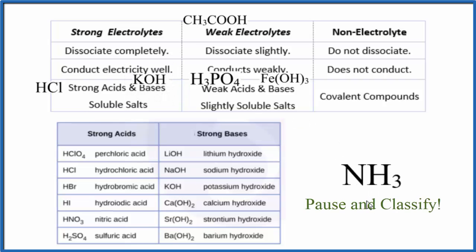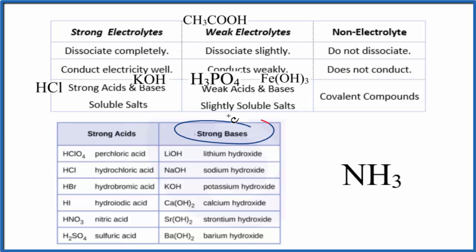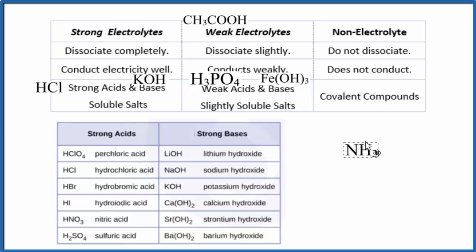What about NH3? NH3 is a bit of a trick — this is one you just need to memorize. NH3 is considered a base, and if we look at our list of strong bases, it's not on the list. So we consider NH3 to be a weak base, and therefore a weak electrolyte. I recommend you memorize NH3 as a weak base; it'll save you a lot of trouble.